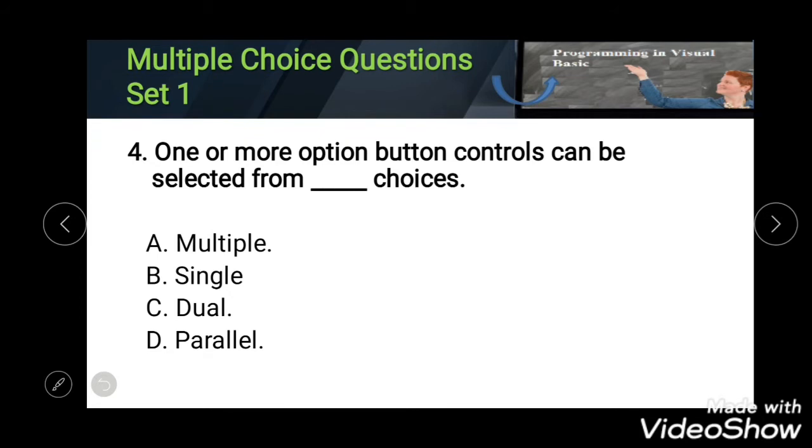Fourth: one or more option button controls can be selected from blank choices. Options: Multiple, Single, Dual, and Parallel. The correct answer is Multiple choices.